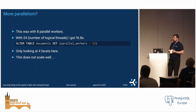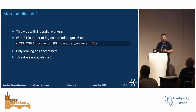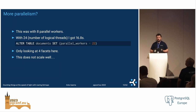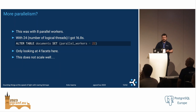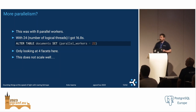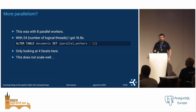Maybe we can use more parallelism. By default we used eight cores, but the machine had 24 virtual cores. If we use that, we can get down to 17 seconds. But 17 seconds is still not interactive, and we don't want to use some 200-core monster. We are only looking at four facets here, so it might get even worse if you have more.